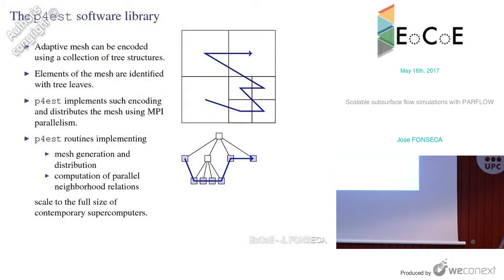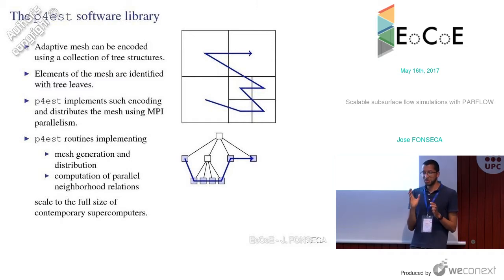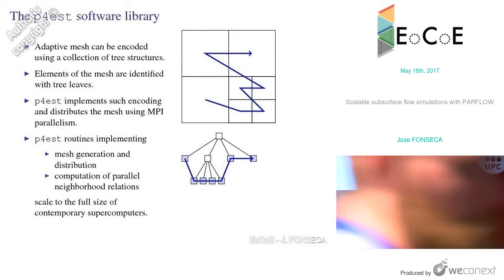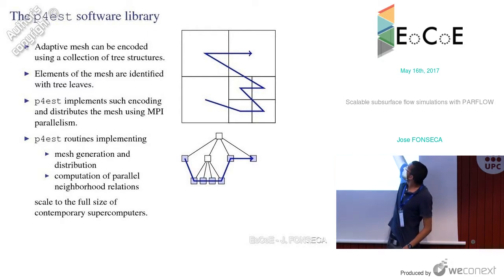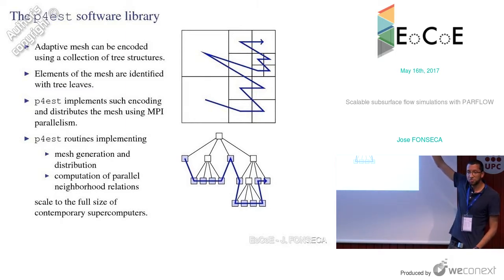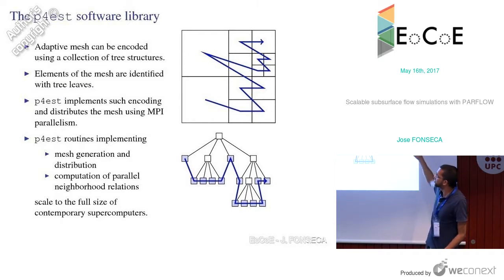What does the P4est library do? An adaptive mesh can be encoded using a collection of tree structures — binary trees in 2D or octrees in 3D — and the elements of the mesh can be identified with the leaves of those trees. In the picture, the big square is the root node; it is refined once to give four children, and each child can be further refined. The broken line you see is a space-filling curve, which gives an ordering of the mesh elements and helps encode the entire mesh. P4est uses this encoding to create and distribute a mesh using MPI parallelism.